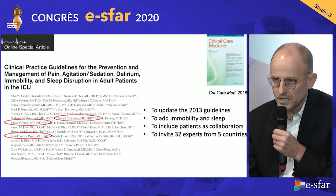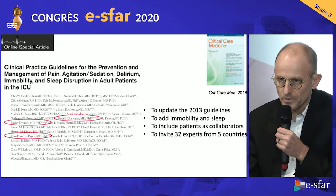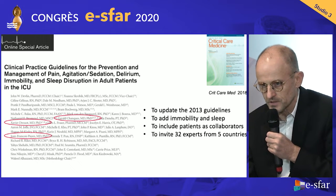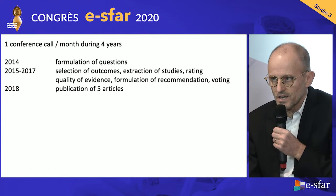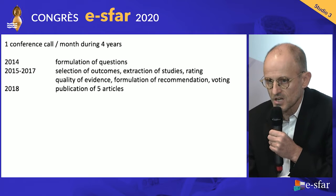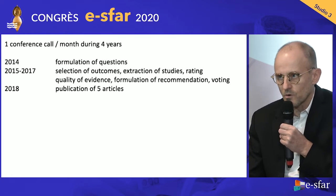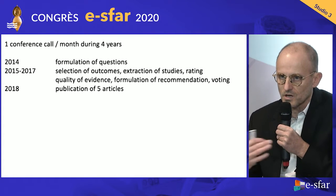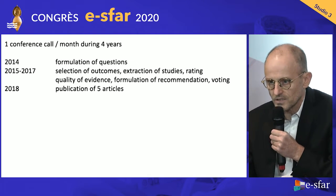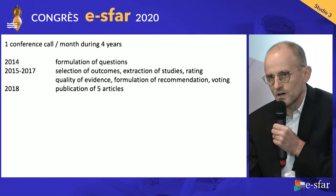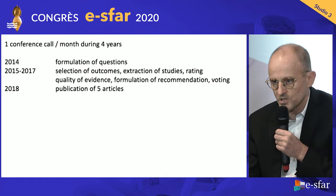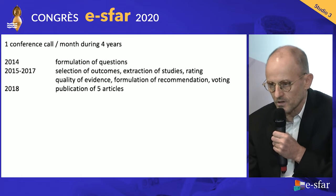I was personally involved in the pain group, where there were six of us reviewing all articles on this topic. We had one conference call per month for four years. We started in 2014 by formulating questions, then followed an extensive process to select outcomes, extract studies and data, and rate the quality of evidence for each study.